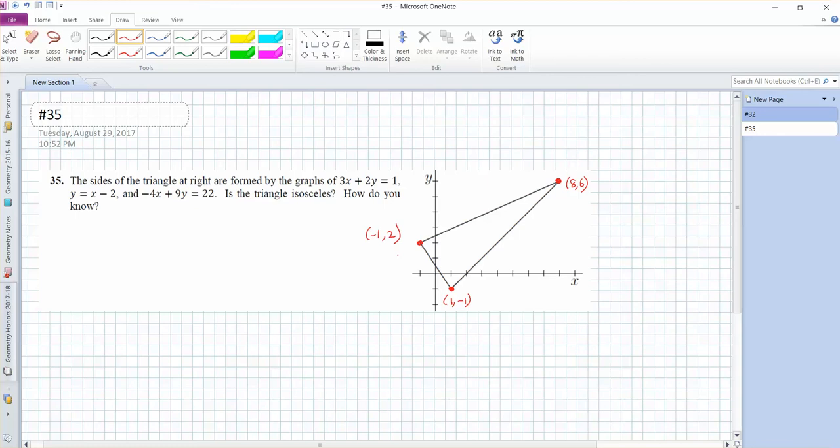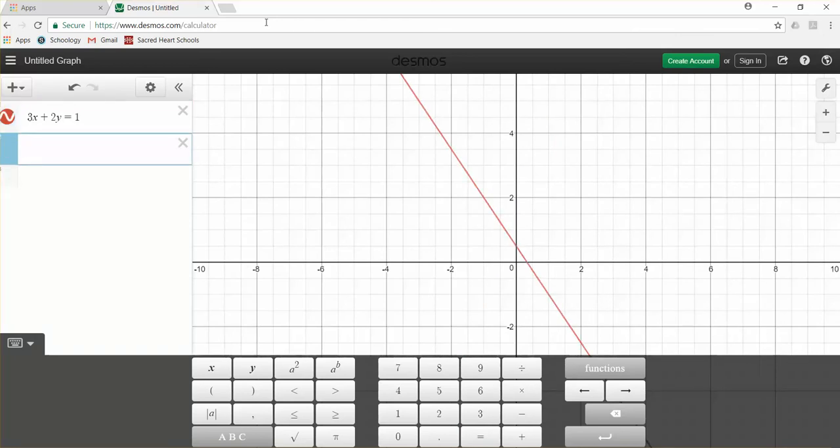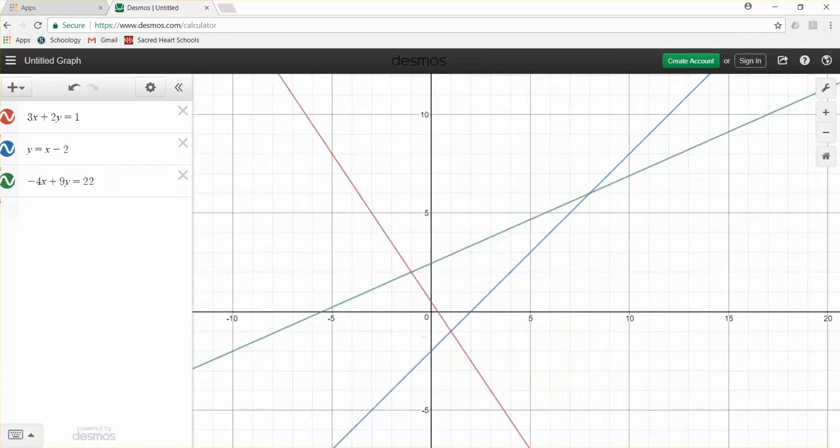So one easy way to check would be to plug them into Desmos. So I've done the Desmos website here, and I'm just going to plug in those three equations. One of them was 3x plus 2y equals 1. One of them was y equals x minus 2. And one of them was negative 4x plus 9y equals 22.